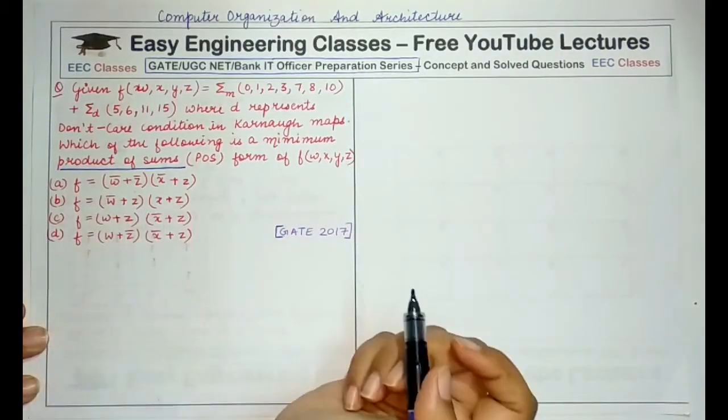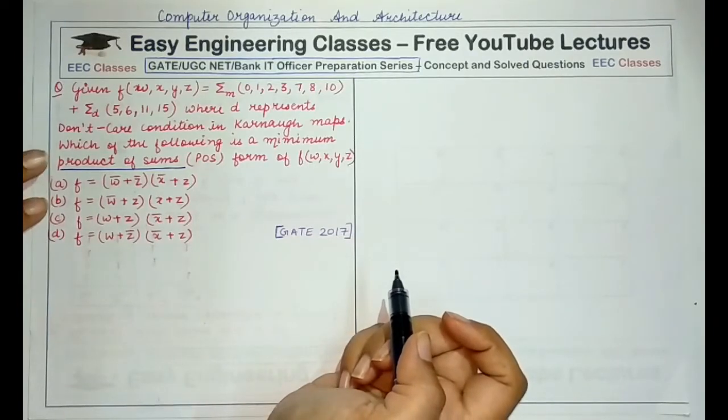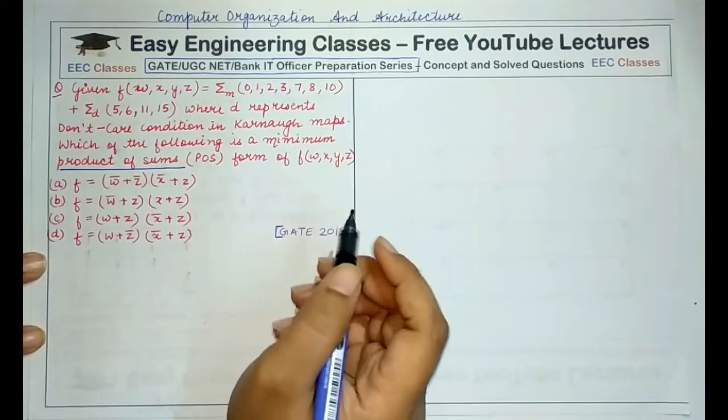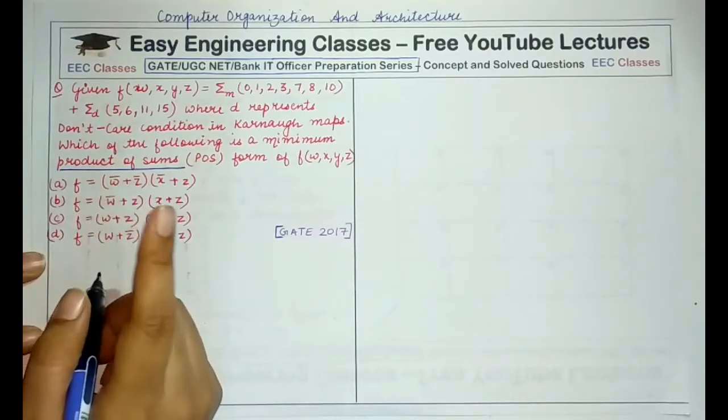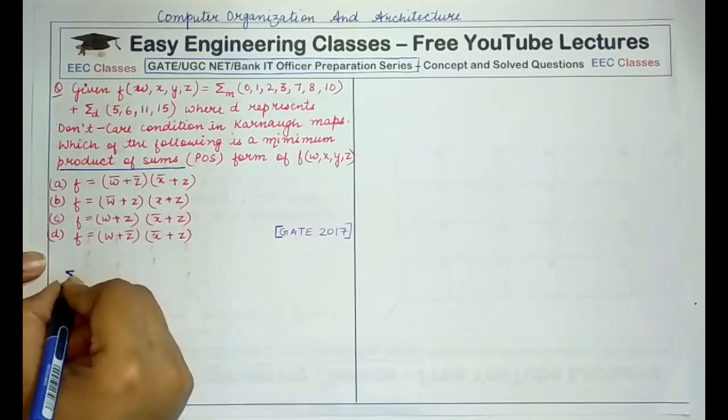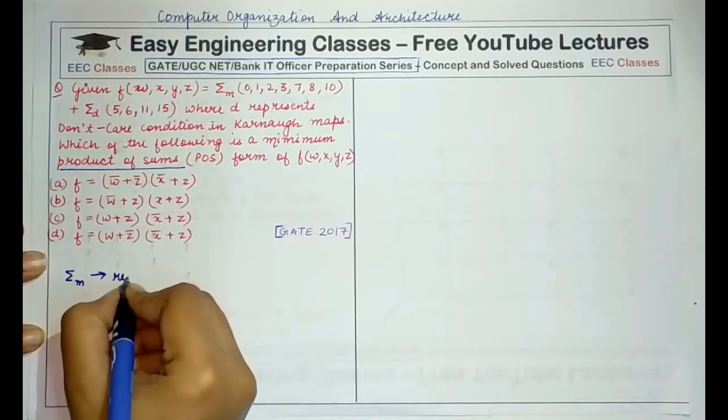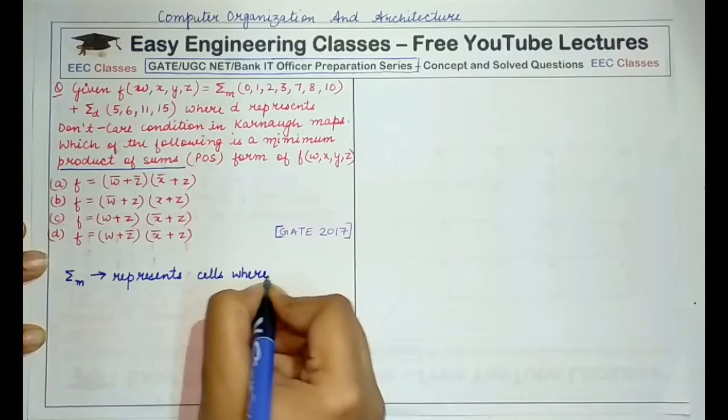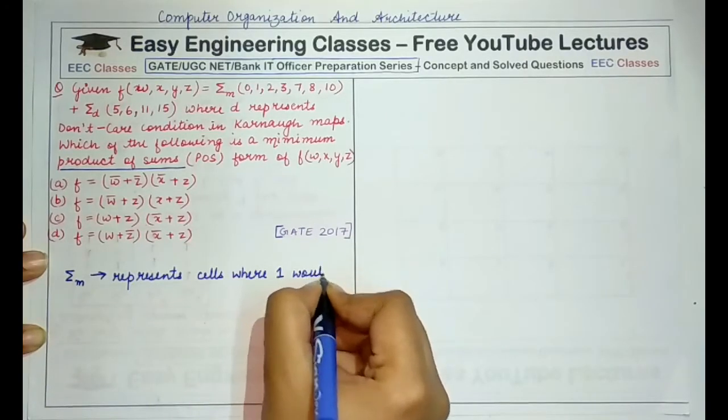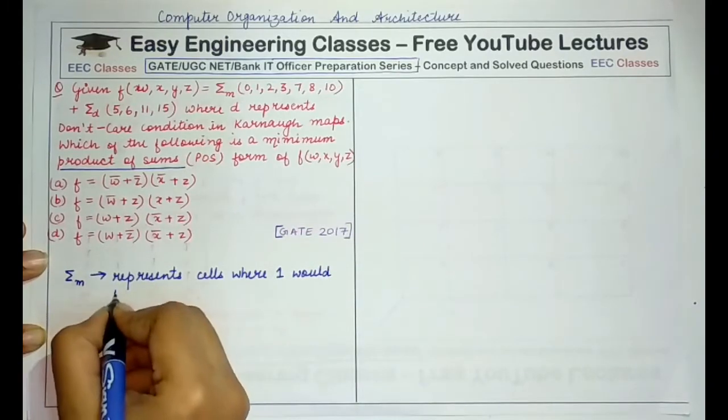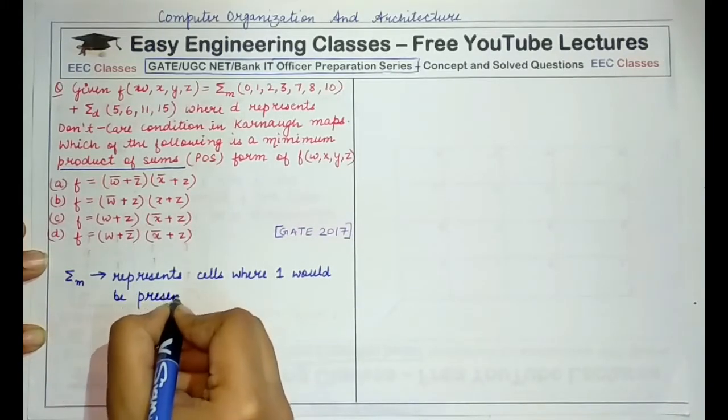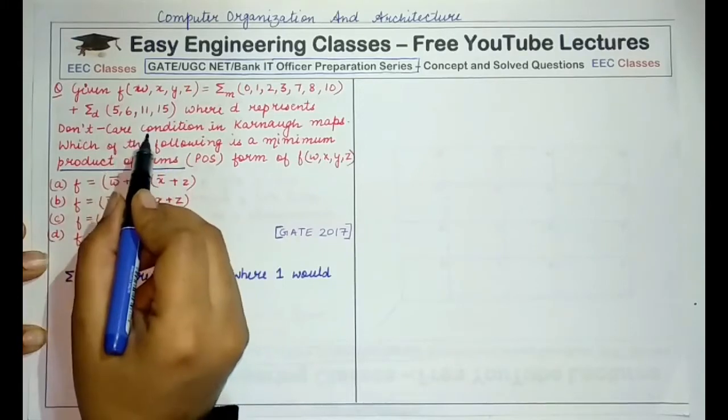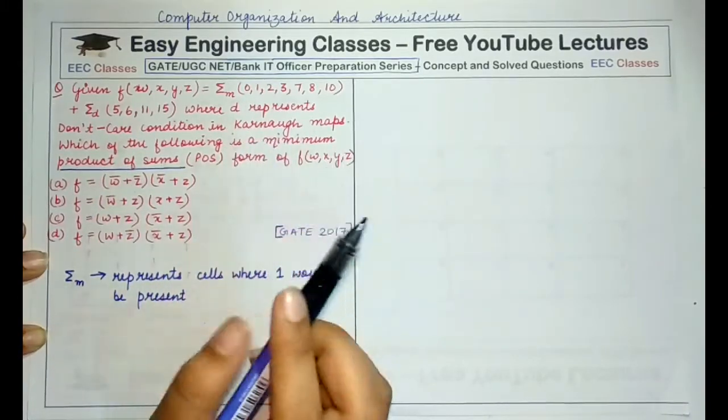One thing you'll notice in this question is that you are being asked product of sums but you are given an expression for sigma. Sigma M basically represents the cells where 1 would be present for sum of products form or SOP form. So if you want to write down the answer in product of sum form, you need to combine the zeros and the don't care terms, not the ones that are specified here. So that is the trick in this question.